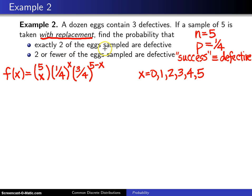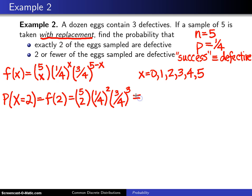Next thing we want to calculate is the probability that two of the eggs sampled are defective. So that is the probability that the random variable capital X assumes the value two. And that will be the probability mass function evaluated at two. So we have five choose two, times one-fourth squared, times three-fourths cubed. Work that out. Five choose two is the same as five times four, which is 20, divided by one times two, which is two. Twenty divided by two is ten.